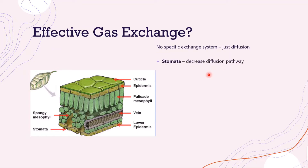First, we have our stomata. The stomata are very effective for gas exchange because they decrease the diffusion pathway — the gas can simply enter the leaf without having to diffuse through a surface like the waxy cuticle. It can just go straight into the leaf.